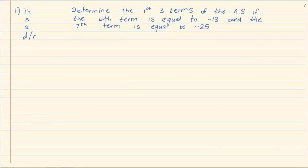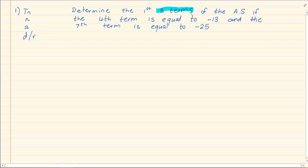Now let's take the following question: Determine the first three terms of an arithmetic sequence. So they are telling you that we are working with a difference and not a ratio. If the fourth term is equal to minus 13 and the seventh term is equal to minus 25.